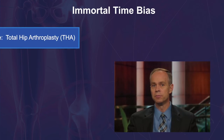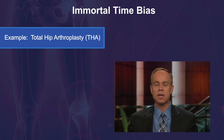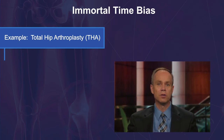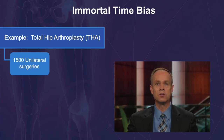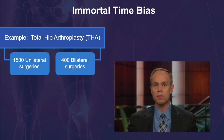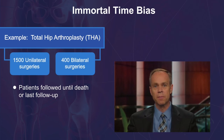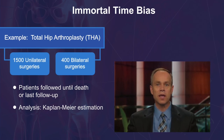Here's an example. The aim of the analysis is to compare patient survival after total hip arthroplasty, or THA, among patients with unilateral versus staged bilateral surgery. The cohort includes 1,500 patients who had surgery on one hip only and 400 patients who had surgery on both hips. The outcome is patient survival, and patients are followed from the date of surgery to death, last follow-up, or the end of the study. The data are analyzed using Kaplan-Meier estimation.